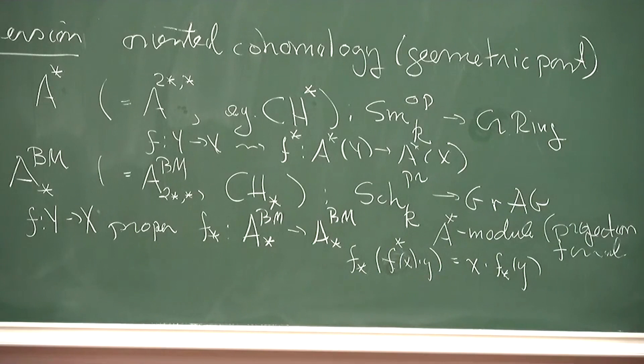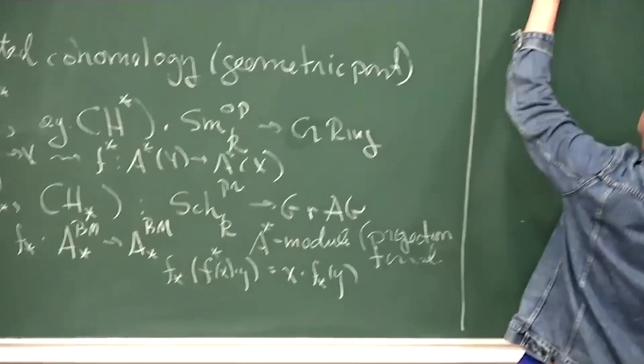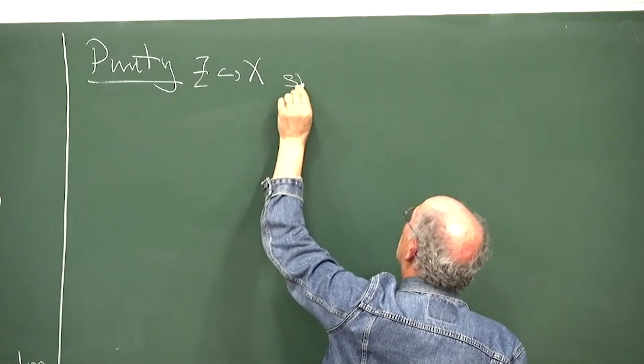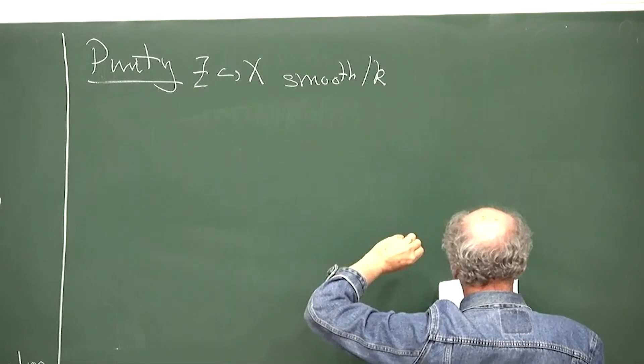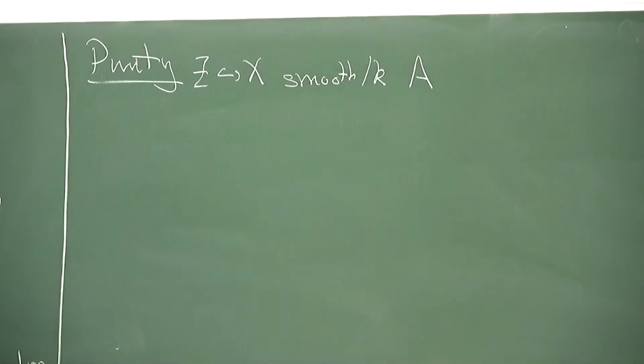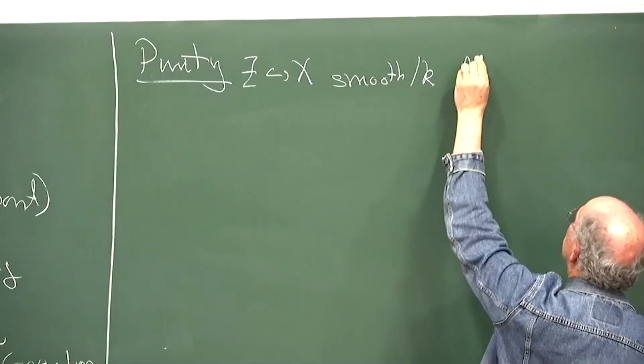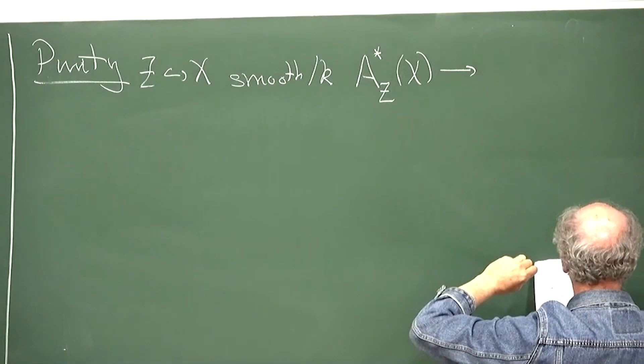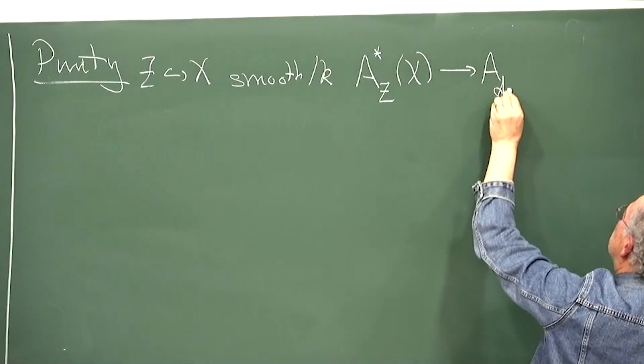You also have the purity property relating these two — like Poincaré duality. If you have Z inside of X, a closed immersion, with both smooth, then once you have the bi-graded theory you can talk about cohomology with supports — which is not obvious from the single grading — and this would be isomorphic to A in degree dimension of X minus star.